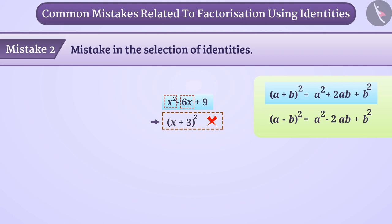Since the algebraic expression shown has a minus sign between x square and 6x, therefore, identity 2 will be used here. Therefore, the desired factorization of algebraic expression x square minus 6x plus 9 is x minus 3 whole square.